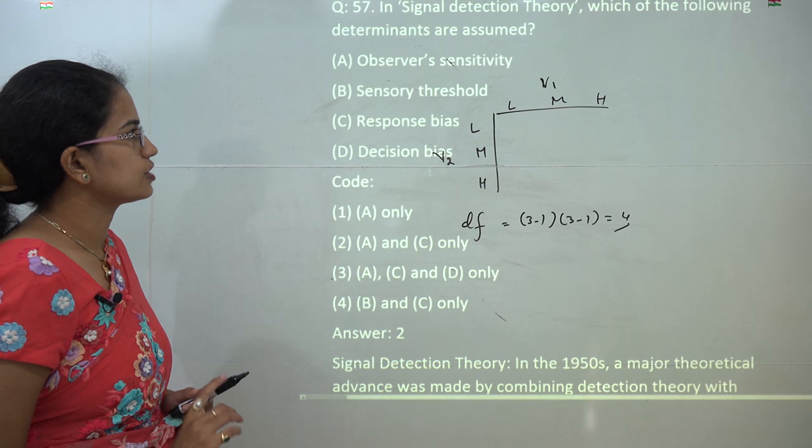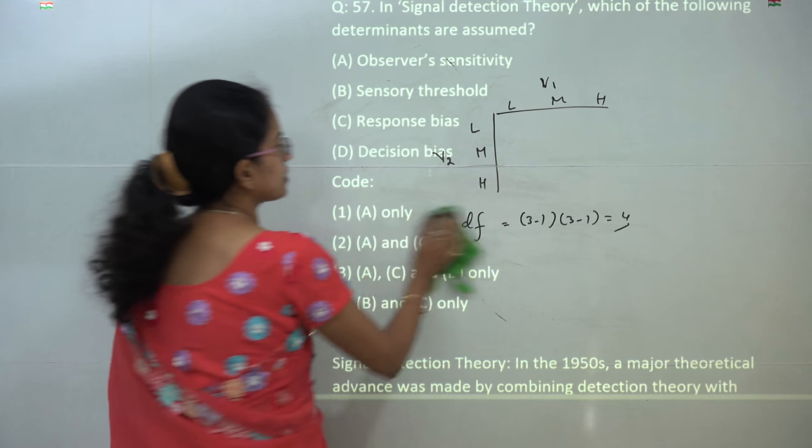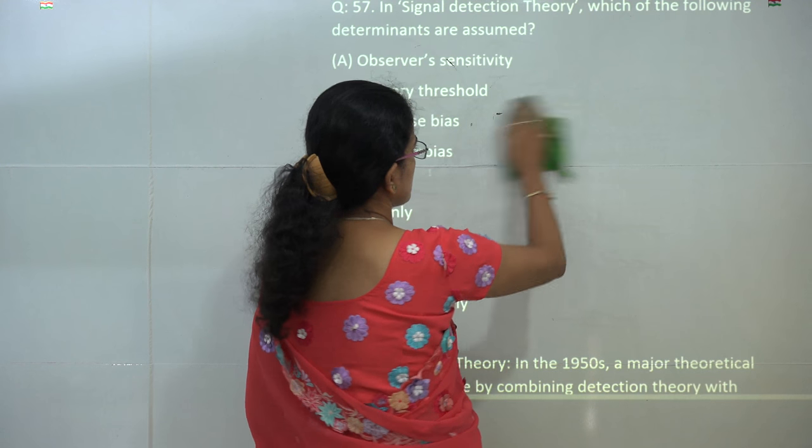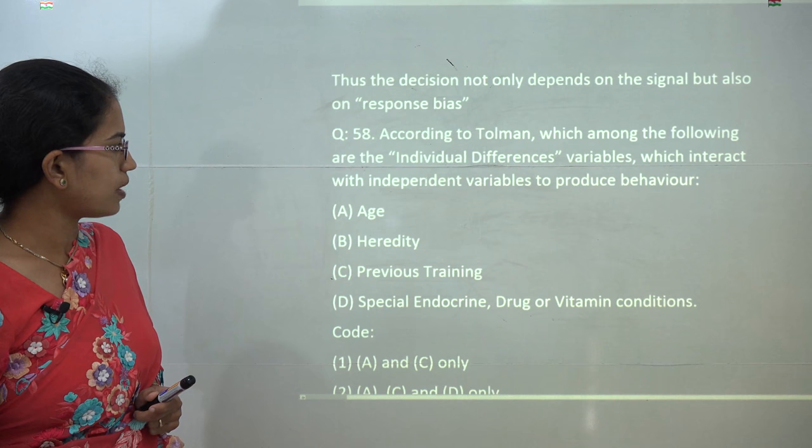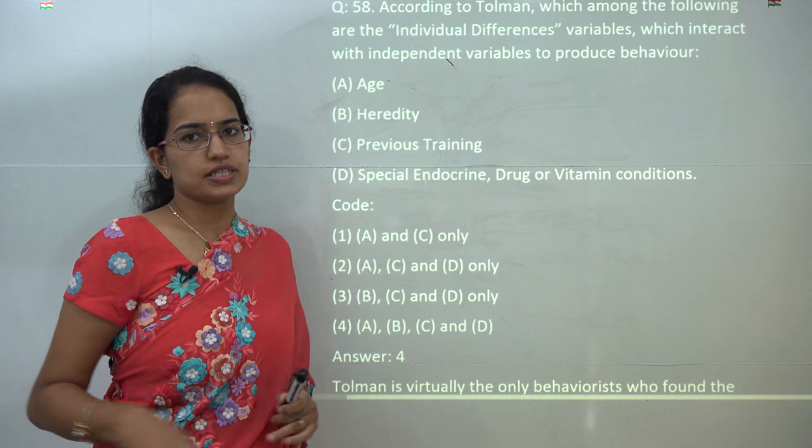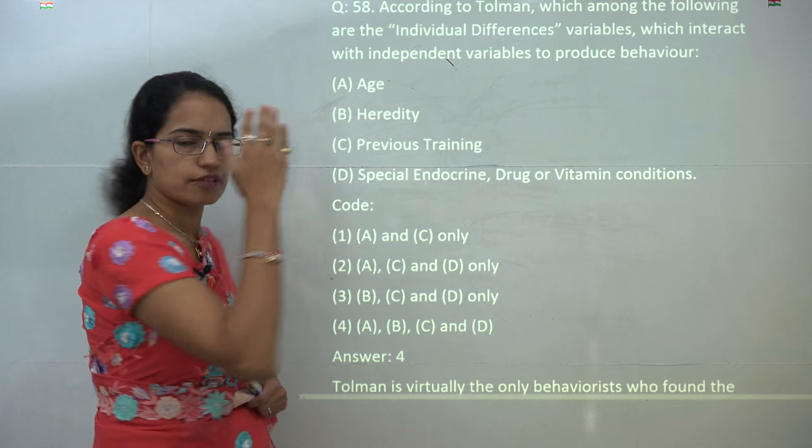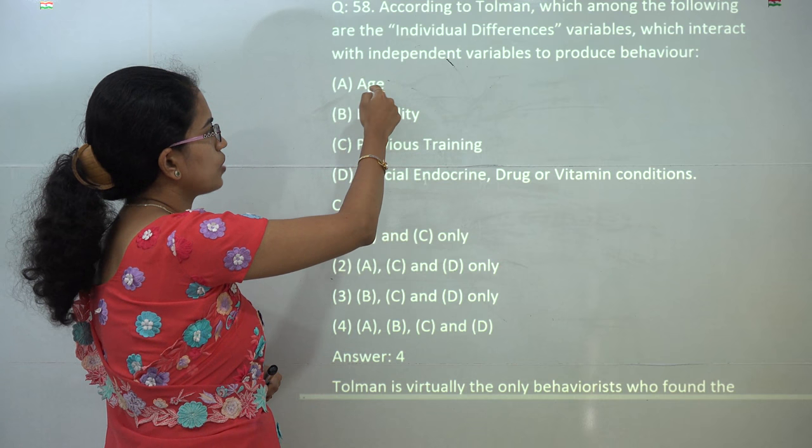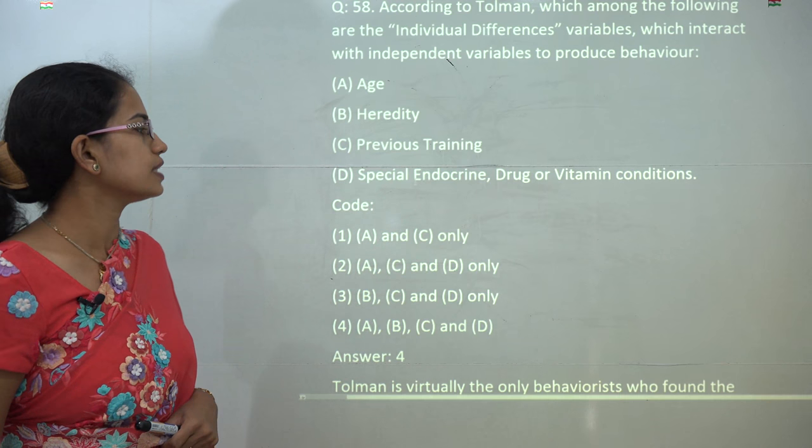Now next is the signal detection theory. Signal detection theory talks about the observer sensitivity and response biasness. So A and C would be the correct answer. Signal detection is again very important; every year you have at least one question on signal detection. So make sure that you are covering this topic carefully. The next question talks about Tolman's idea for individual differences. According to him, the individual differences can be achieved. He gave 10 variables, of which 4 talked about individual differences. So you had age, hereditary, previous training, and special endocrine drug or vitamin condition. So all of these would be the correct answer.